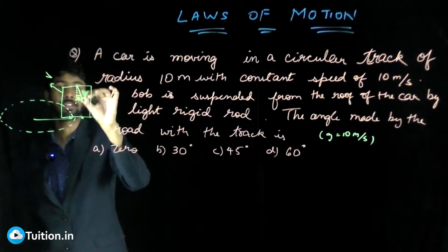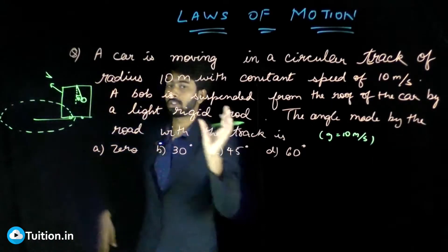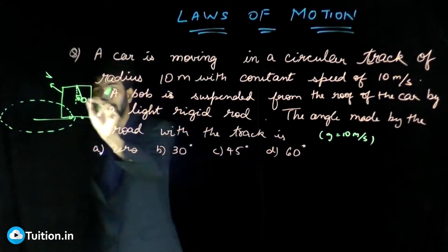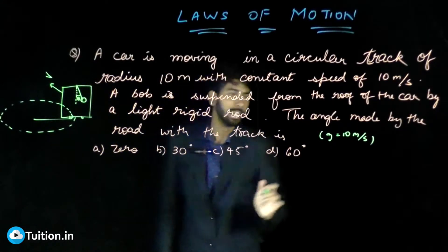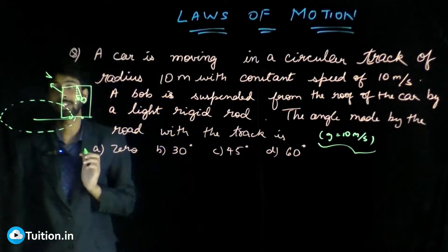This angle be theta. It's making an angle theta because the car is moving, so the bob is slightly tilted at some angle theta with the vertical. You need to find this angle theta. That's all the problem is. Take g equal to 10 meters per second squared. Let's see what's happening here.